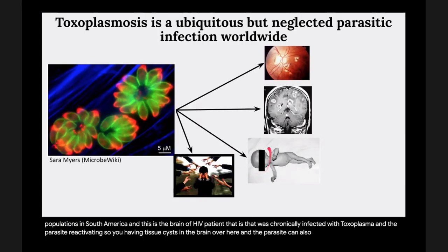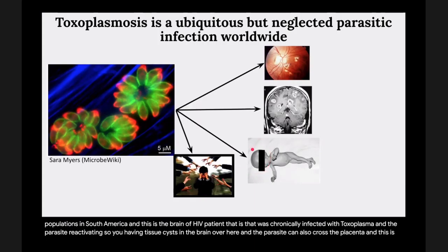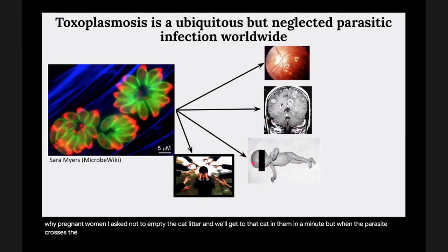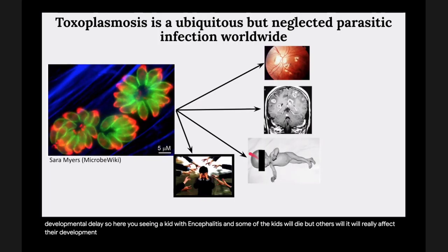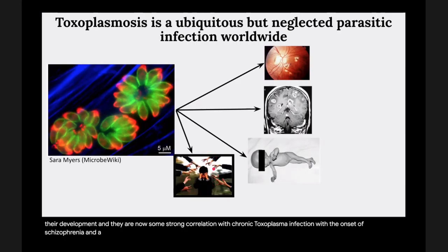The parasite can also cross the placenta, which is why pregnant women are asked not to empty the cat litter. When the parasite crosses the placenta it can infect the fetus and cause abortion, premature birth, and developmental delay. Here you're seeing a child with encephalitis — some kids will die, but others will have their development significantly affected.